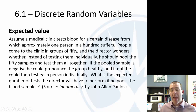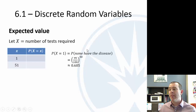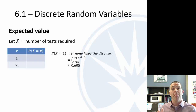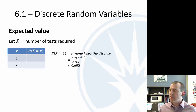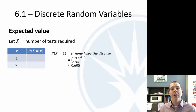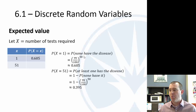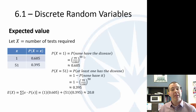One person in 100 has this disease. So the probability that none of the 50 have it is (99/100) to the 50th power, assuming independence — that it's random who has the disease. That equals about 0.605. The probability that we'd have to do 51 tests is the complement — at least one person has the disease — so one minus 0.605 gives us 0.395. When we do the expected value: 1 times 0.605 plus 51 times 0.395, we get about 20.8.